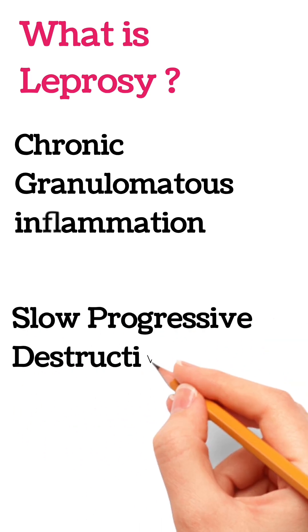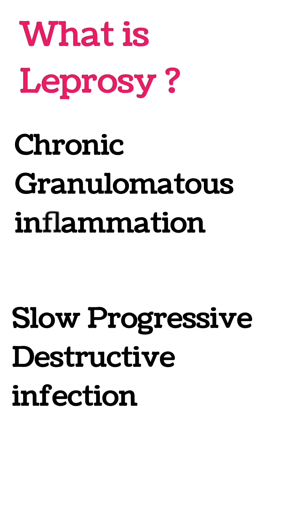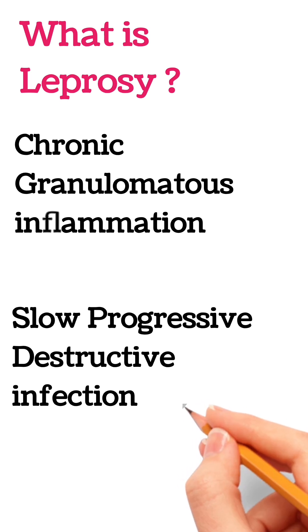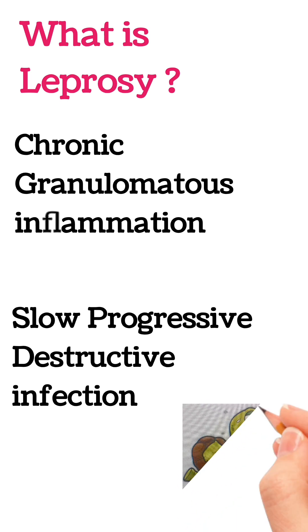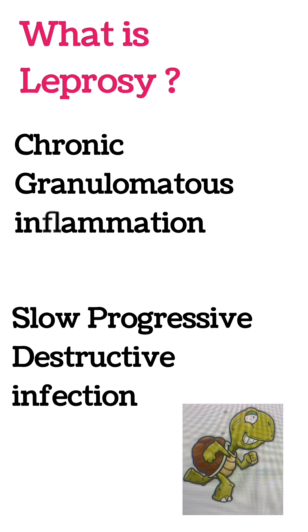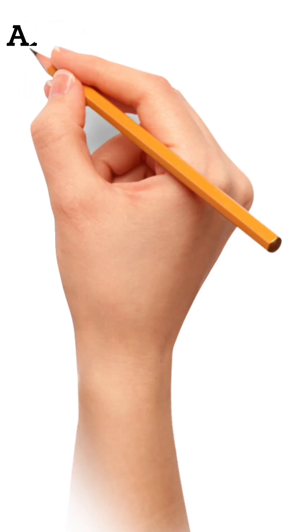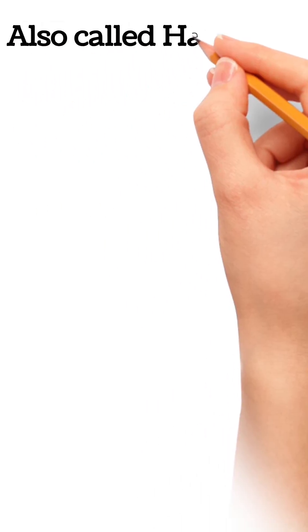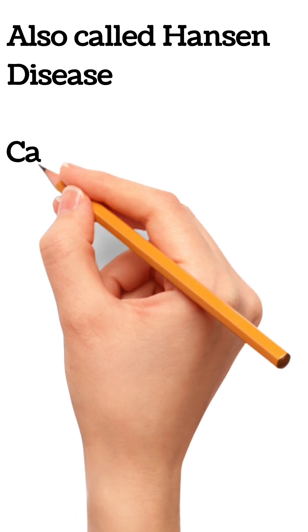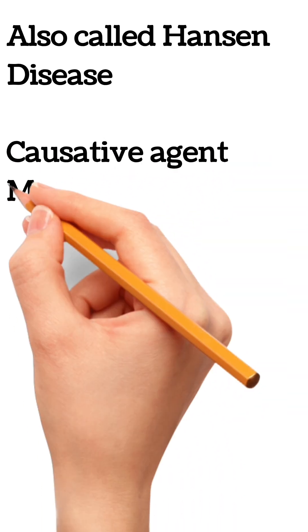It is a slow, progressive, destructive lesion. It will slowly destruct the underlying affected tissue of the skin and mucous membrane. It is also called Hansen disease, after the name of the scientist who discovered it.